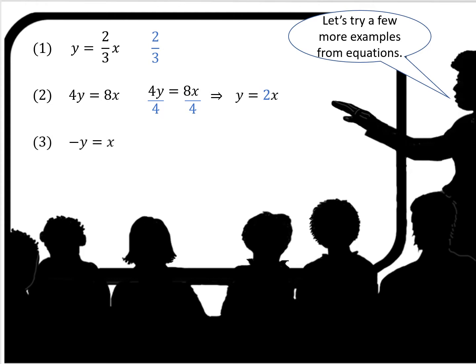Negative y equals x. Again we're going to need to put it in the correct format. So we would divide both sides by negative 1 and we come up with y equals negative 1x. You would probably see it as negative x, which would indicate there is a negative 1 in that k position.